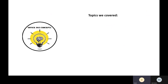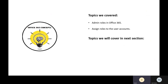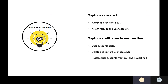So let's summarize what we've covered in this session. We discussed what admin roles are available in Office 365 and how you can assign those roles to user accounts. In the next session, I will be discussing user account states in Office 365, how to delete and restore user accounts from the graphical user interface or Office 365 admin center and from PowerShell, and how to purge a user account manually with PowerShell. If you learned something new, please write in the comments and subscribe to the channel. Thank you for watching.